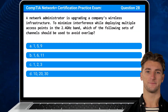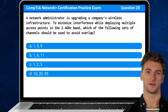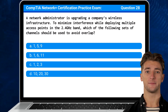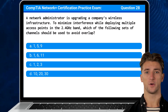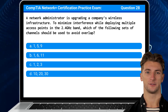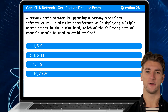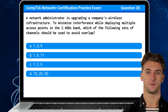Question 28: A network administrator is upgrading a company's wireless infrastructure. To minimize interference while deploying multiple access points in the 2.4 GHz band, which of the following sets of channels should be used to avoid overlap?